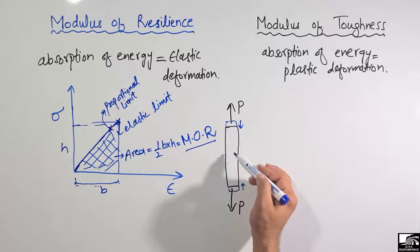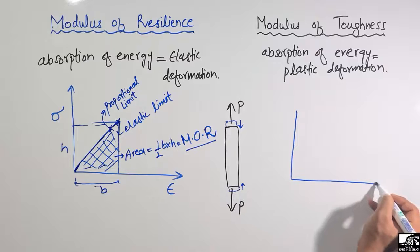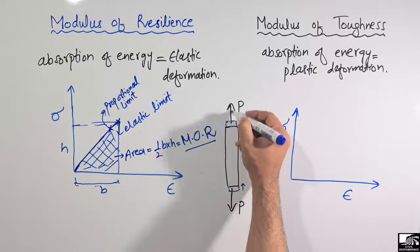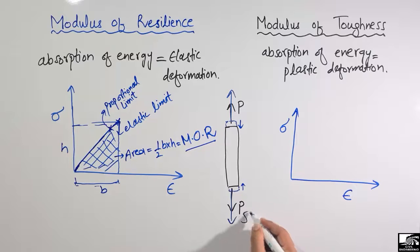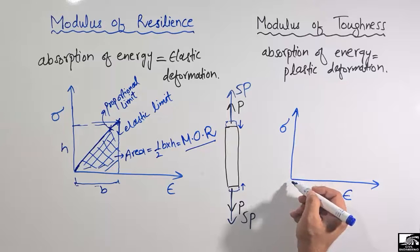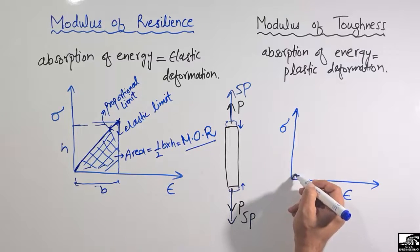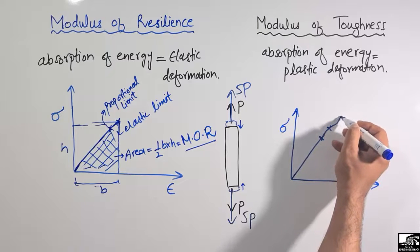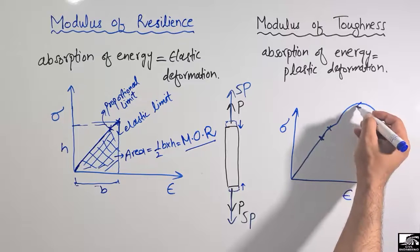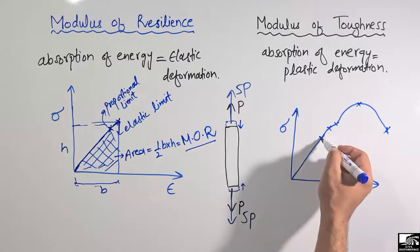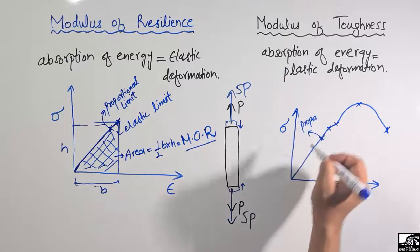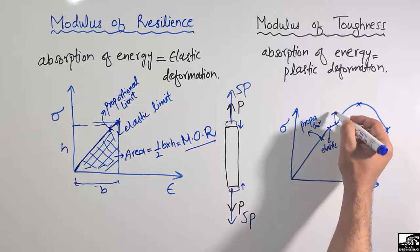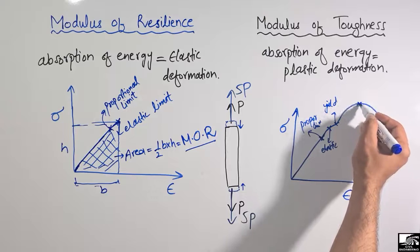Now consider the similar steel bar with a stress-strain diagram showing stress on the y-axis and strain on the x-axis. By increasing the load — let's suppose we increase it to 5P — if I draw the whole stress-strain diagram for the steel bar, it will look like this: there will be a proportional limit, then an elastic limit, then yielding, then a maximum point, and then failure. The first limit is the proportional limit, the second is the elastic limit, and the third is the yield limit.